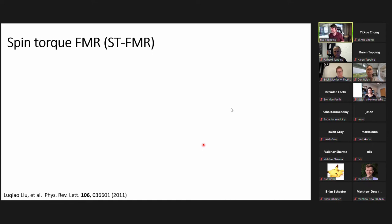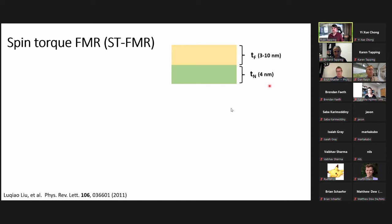One way we can actually measure the damping-like torque is through a technique known as spin torque ferromagnetic resonance, or STFMR. First, I sputtered a non-magnetic layer, for example 4 nanometers of platinum, and then on top of that a ferromagnetic layer of 3 to 10 nanometers. The idea behind this measurement is that we flow an RF charge current through the stack. The charge current through the non-magnetic layer is converted via the spin Hall effect into a transverse spin current, which can cause precession of the magnetization.